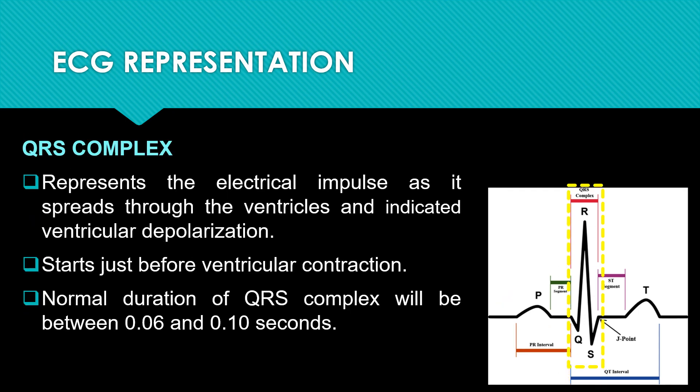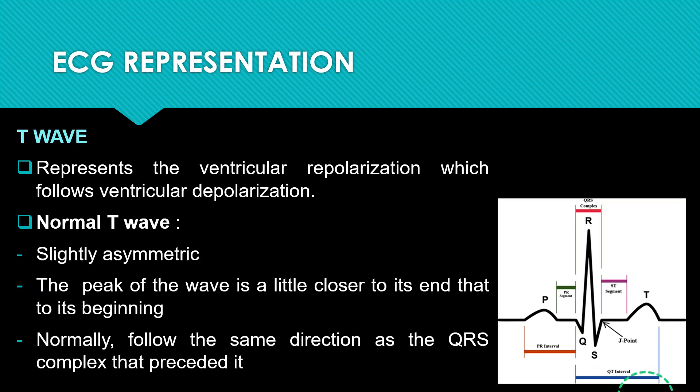Next is the QRS complex, which represents the electrical impulse as it spreads through the ventricles and indicates ventricular depolarization. It starts just before ventricular contraction and the normal duration is between 0.06 and 0.10 seconds. The T wave represents ventricular repolarization, following ventricular depolarization. The normal T wave is slightly asymmetric and normally follows the same direction as the QRS complex preceding it. If the T wave does not follow the same direction as the QRS complex, it commonly indicates some cardiac pathology.